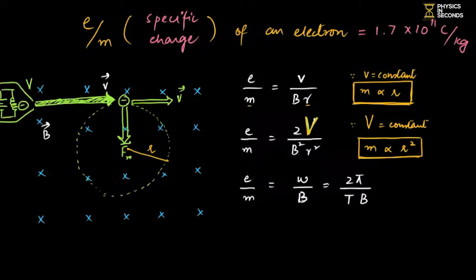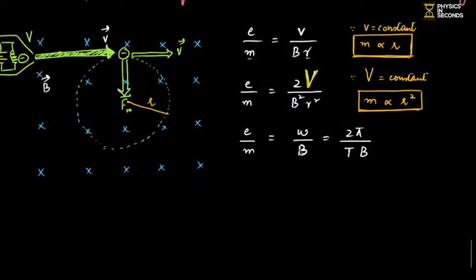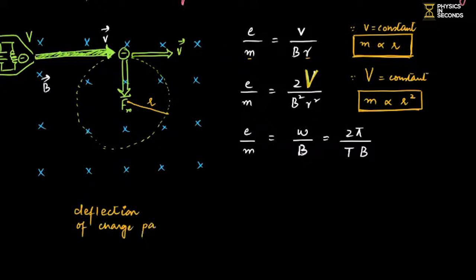From these relations we can determine: whose Charge to Mass Ratio is greater — electron's, proton's, or alpha particle's? Whose deflection is greater? Whose radius is greater? Whose time period is greater to complete a loop? Deflection and mass have an inverse relationship: greater mass means greater radius, and greater radius means less deflection.